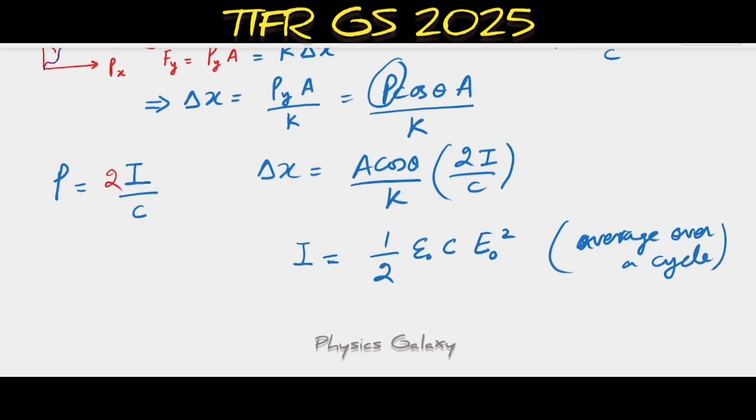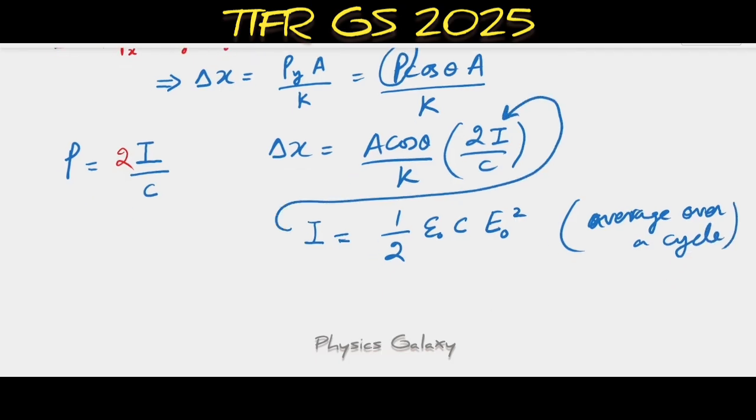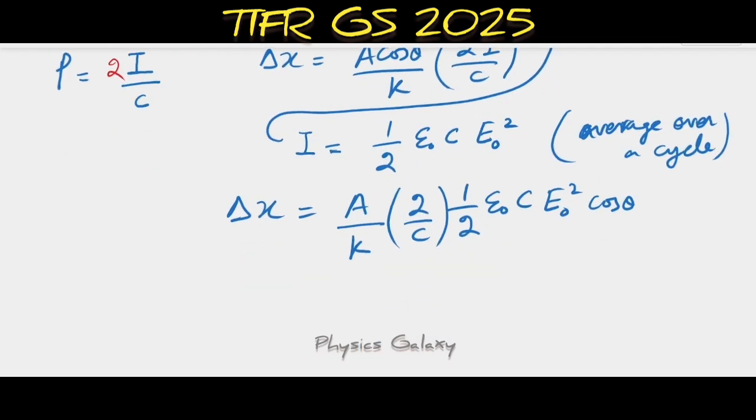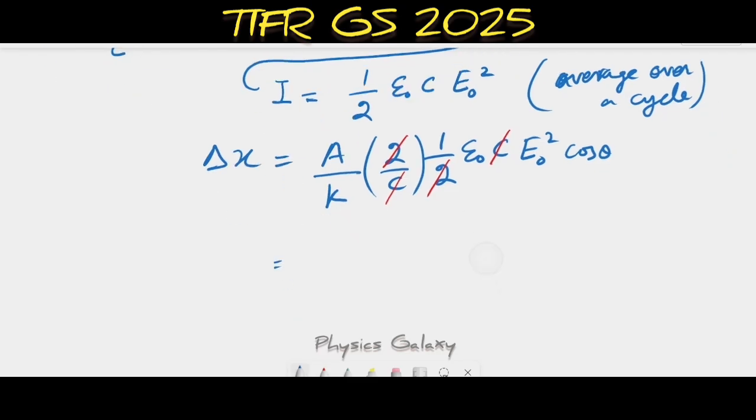If we substitute here, we'll get Δx equals A by K times 2I by c, which is A by K times (1/2)ε₀c E₀² by c. The 2s cancel out and c cancels out, so we have simply (1/2)ε₀ A E₀² cos θ by K.